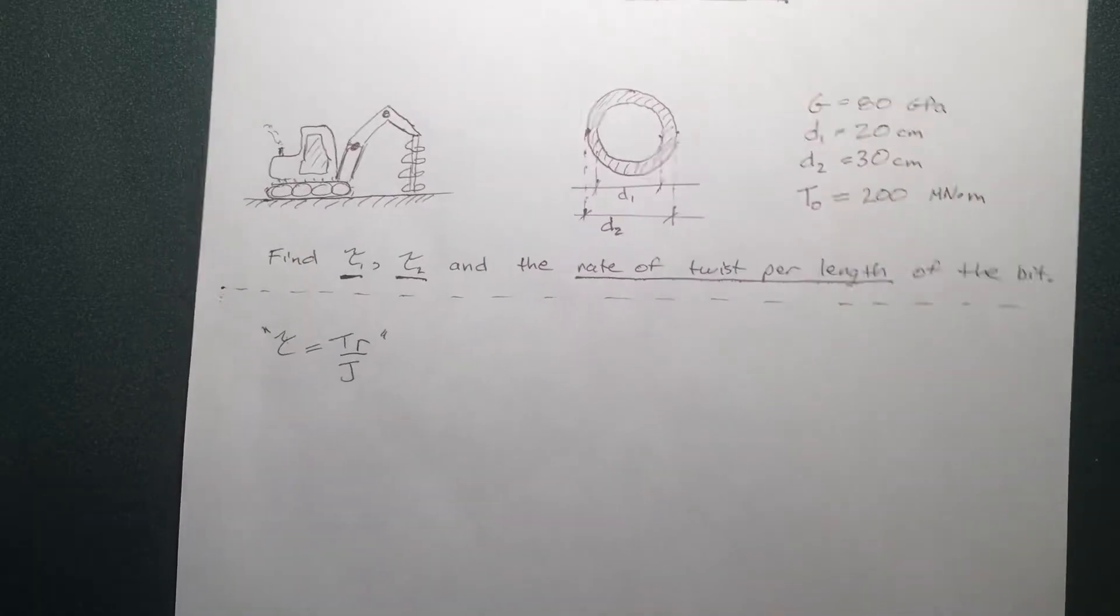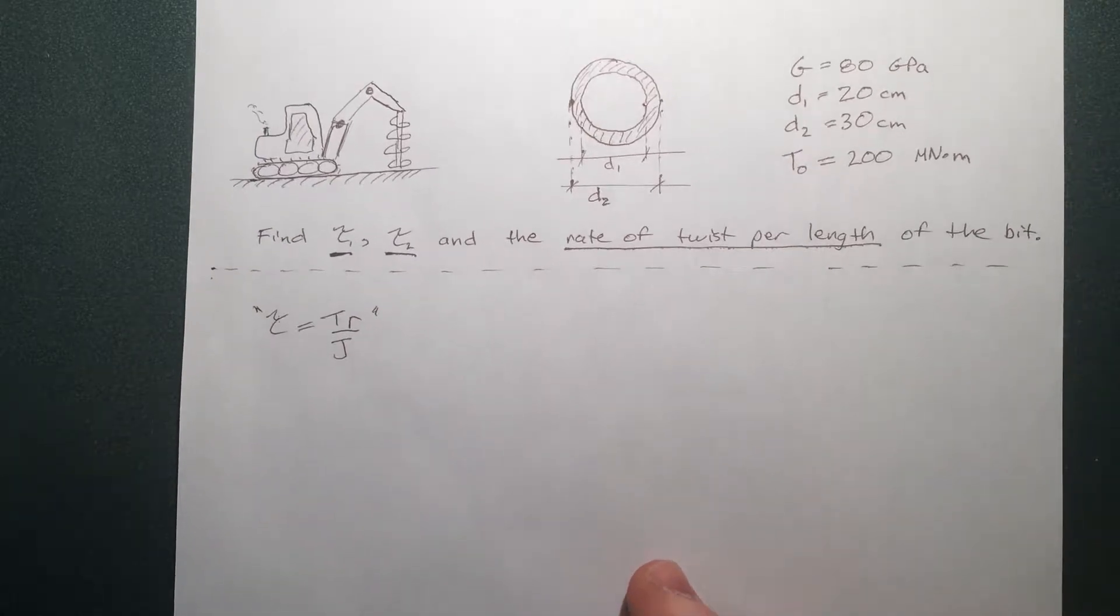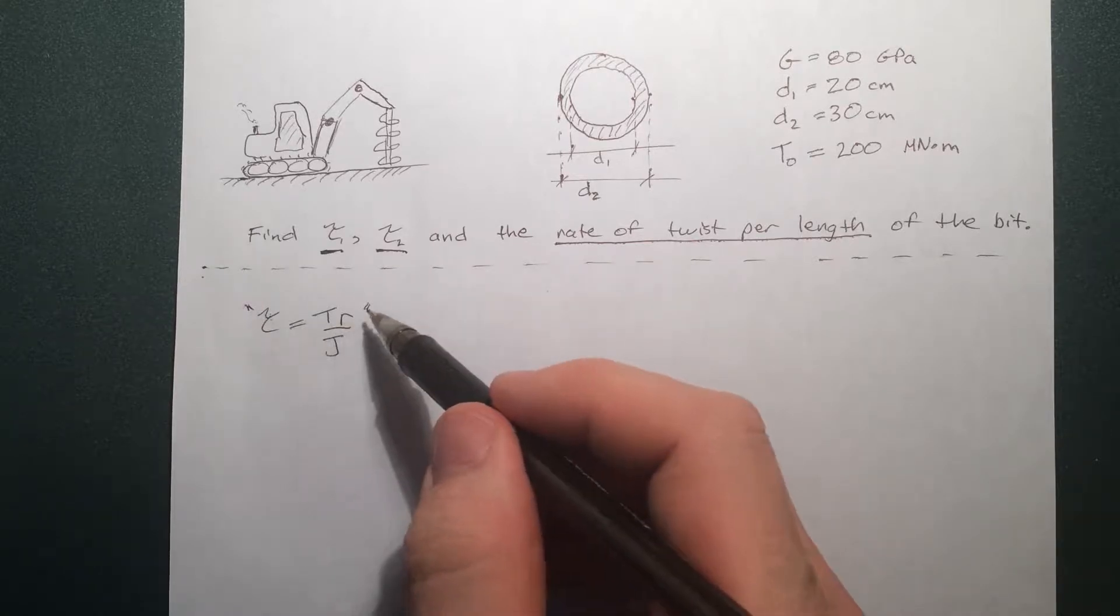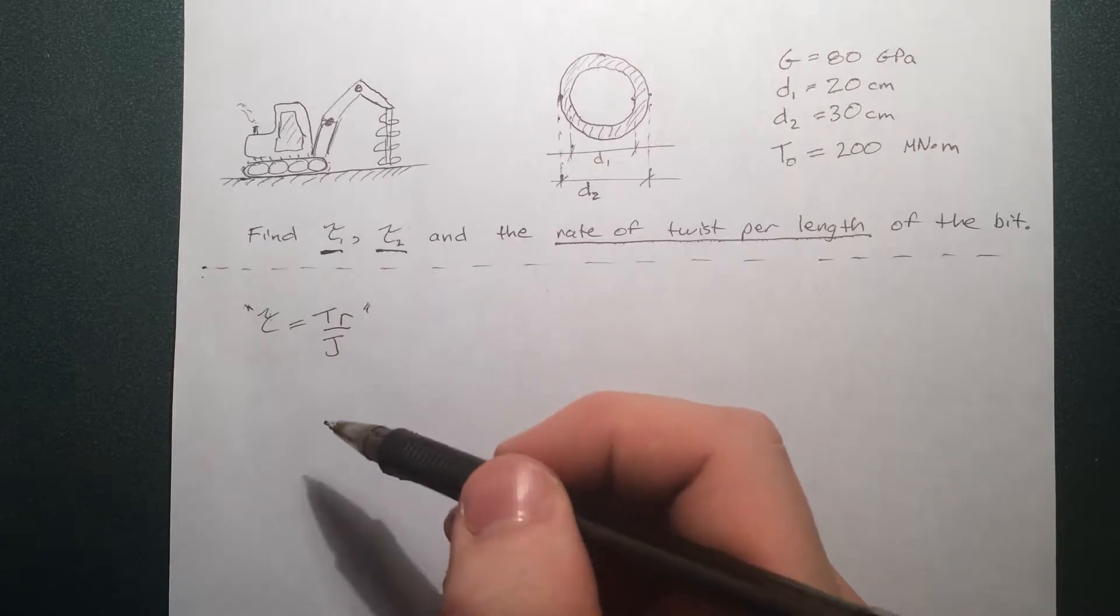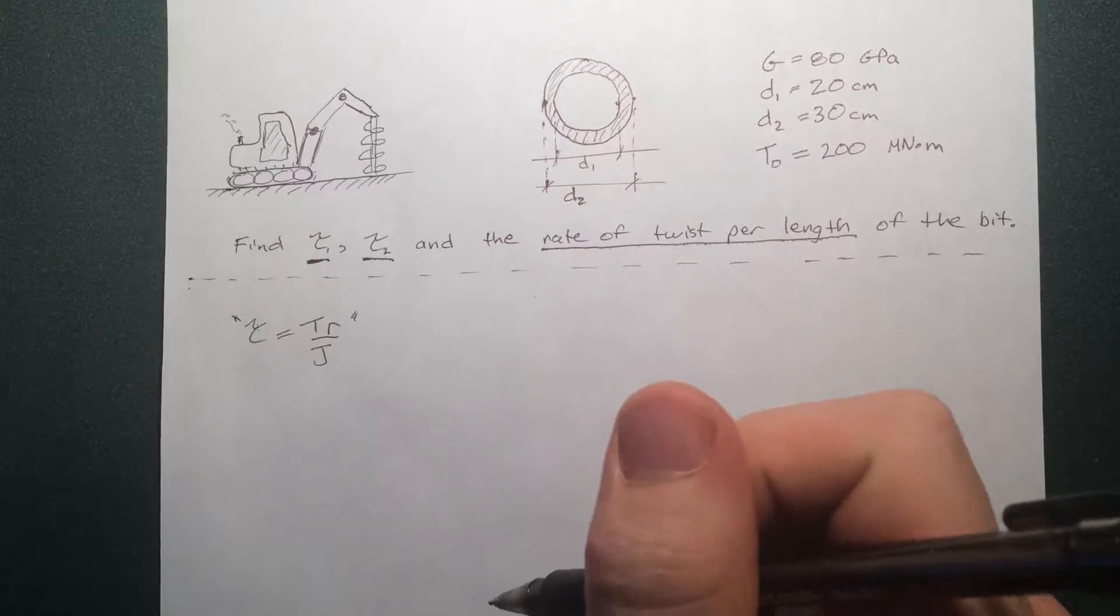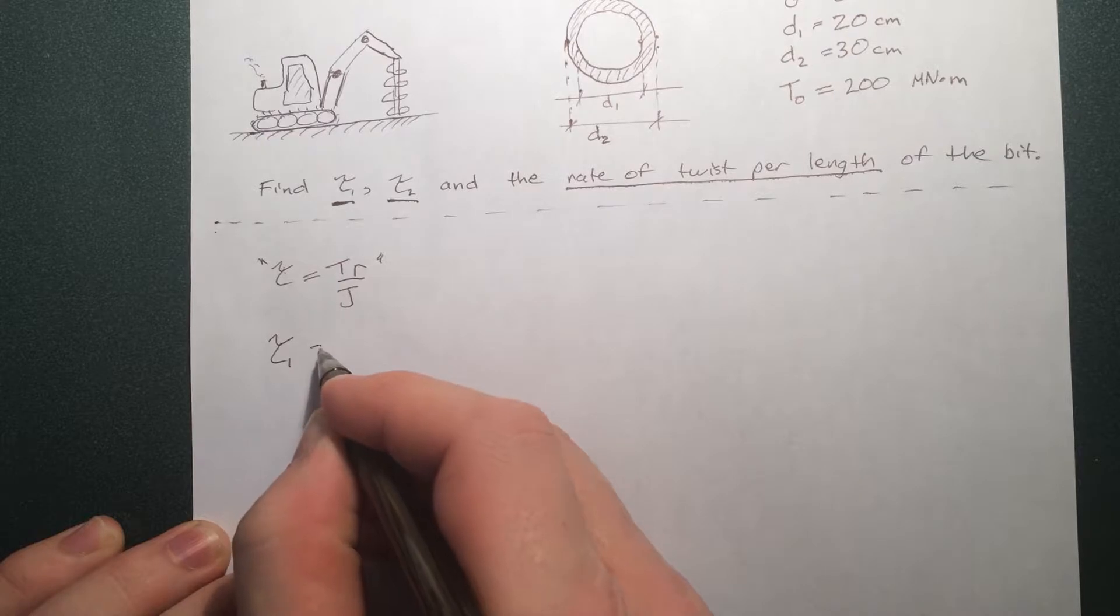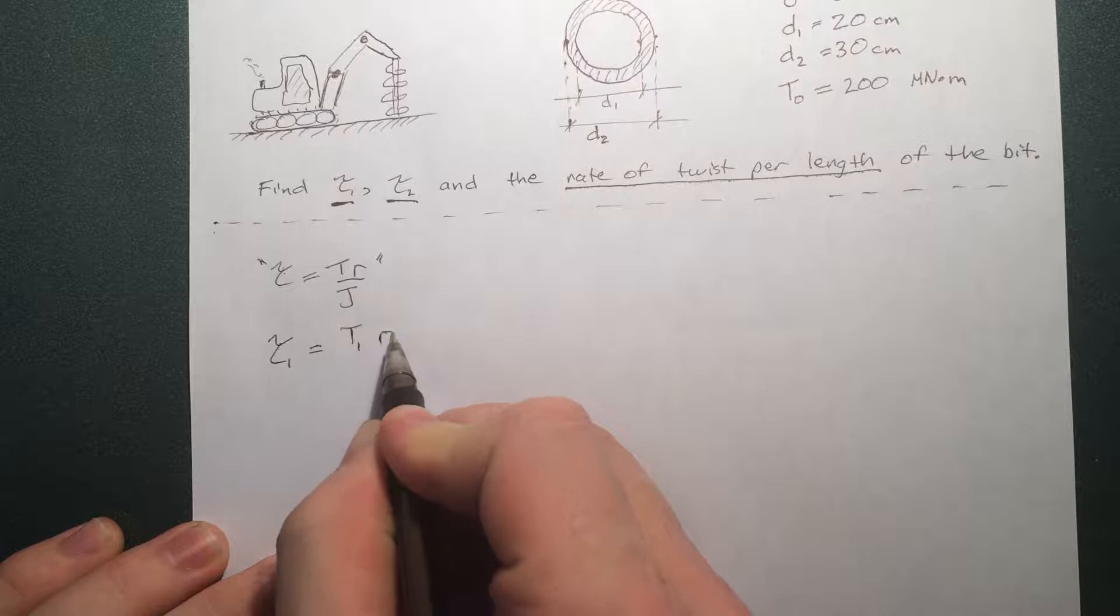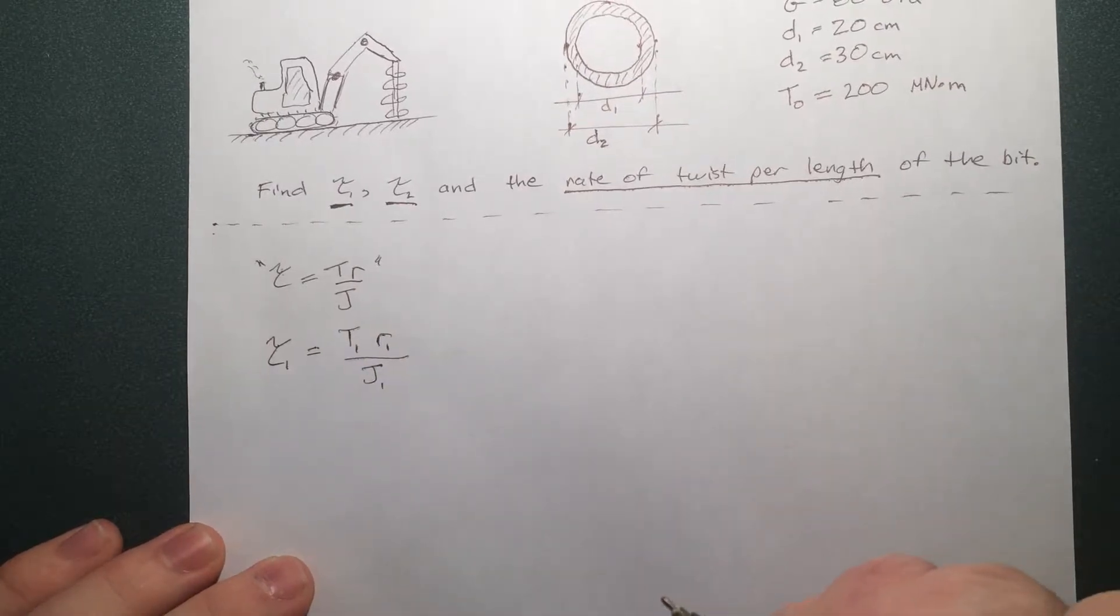So let's go ahead into this. The shear stress, as you know, is defined by this equation here. So in order to solve for τ1 and τ2 we just need to solve this equation for part 1 variables and part 2 variables, or diameter 1 variables and diameter 2 variables. To find the shear stress 1 then you need to find the internal torque in section 1 times the radius of 1 over the J of 1. Let's go and find those variables.